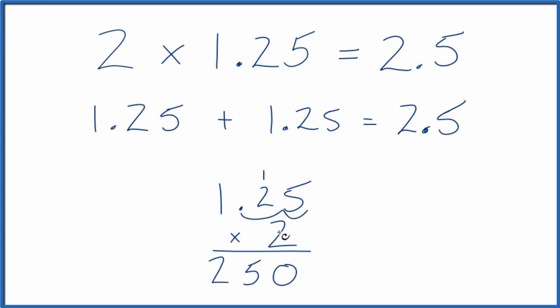Since we have two decimal places here, let's move that over there. So we end up with 2.50, which is the same as 2.5. So in answer to our question, 2 times 1.25, that equals 2.5.